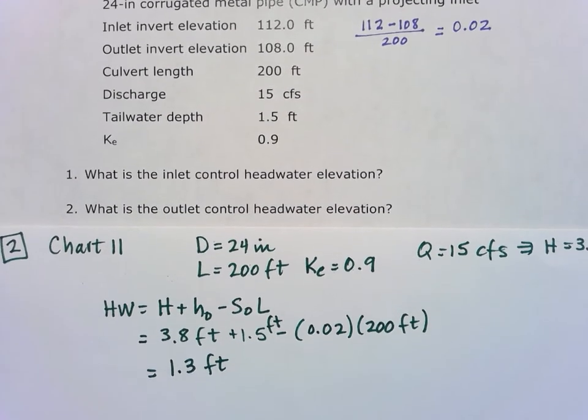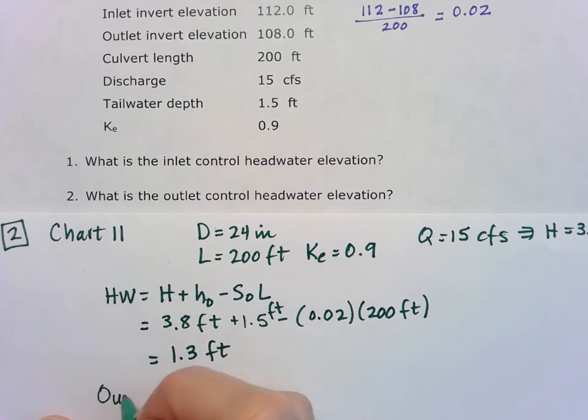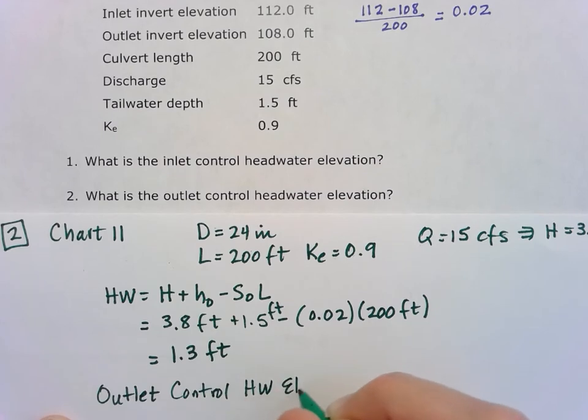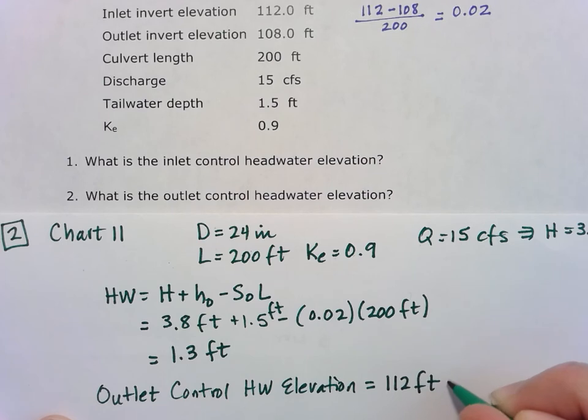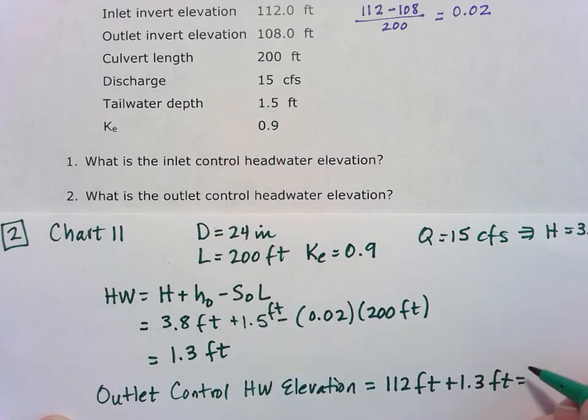So outlet control headwater elevation—because remember headwater is measured at that inlet—we'll take that inlet height elevation which is 112 and we'll add the 1.3 to it. And so that's why we're using that instead of the outlet invert elevation.